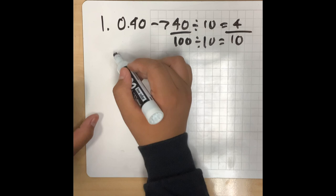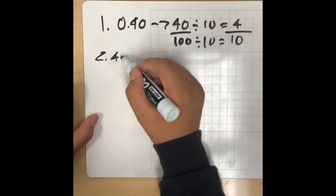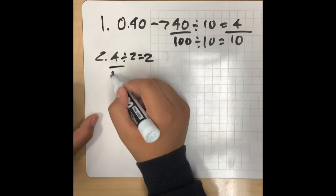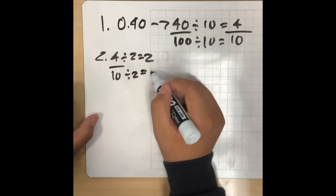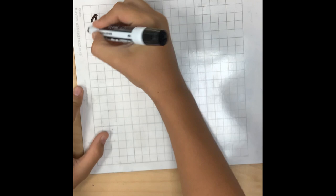Then you have to simplify. Step number two. 4 divided by 2 equals 2, 10 divided by 2 equals 5. So you get 2 over 5.